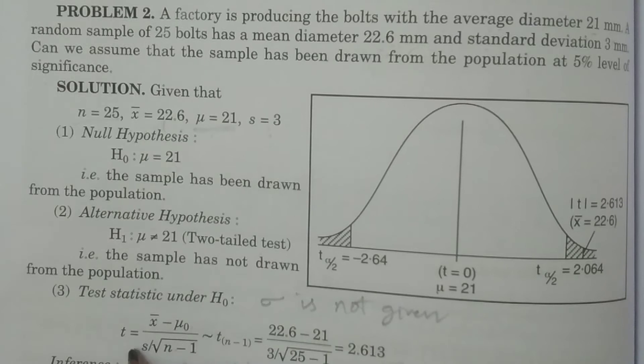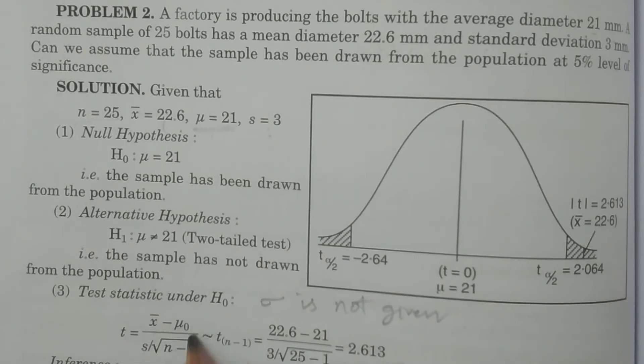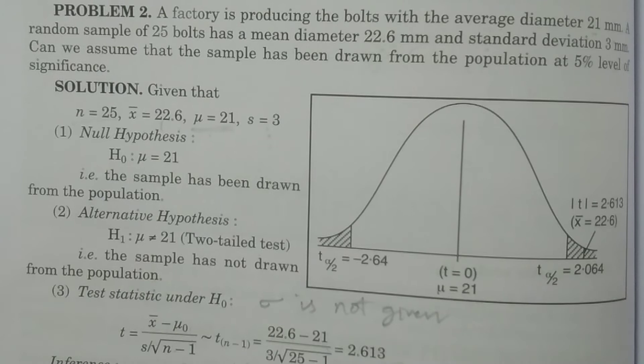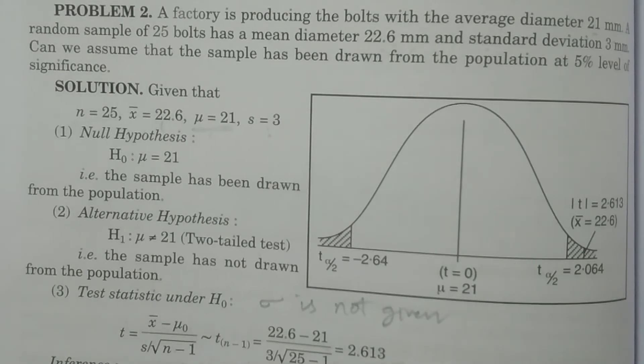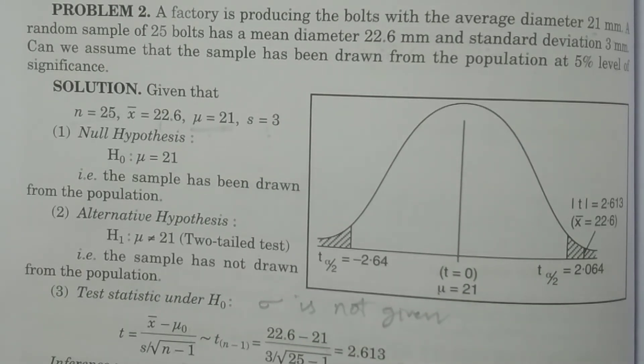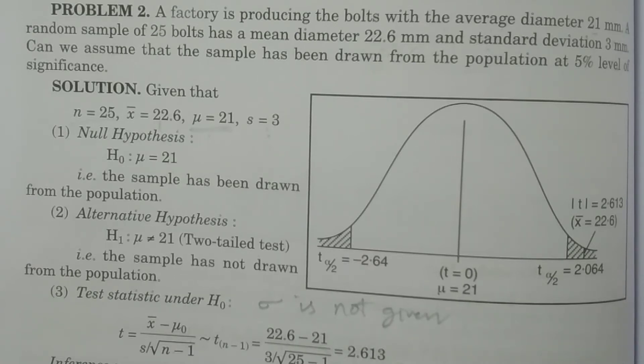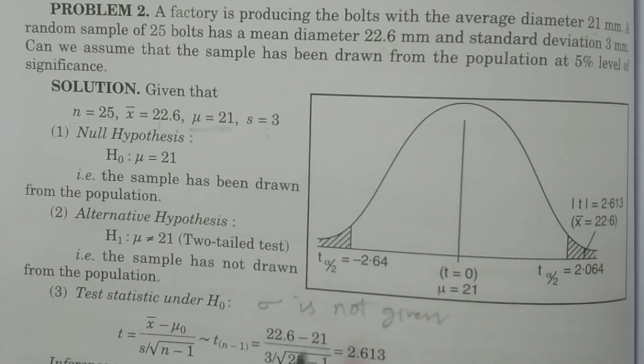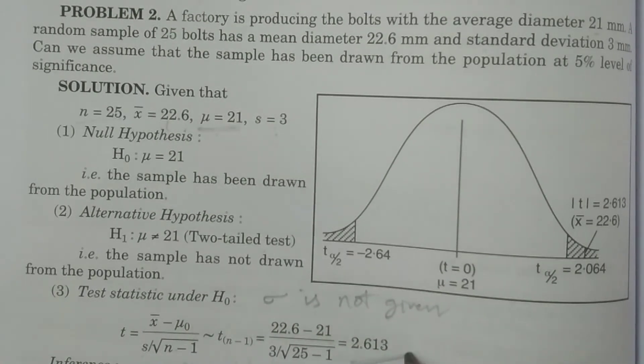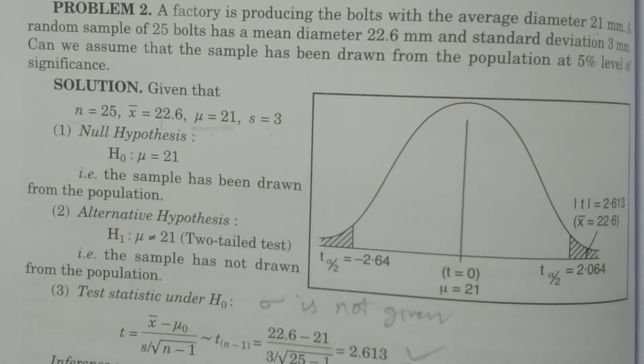That is, substitute values: x bar 22.6, mu naught 21, divided by s, 3 divided by square root of n minus 1, 25 minus 1. And if you calculate these values, 3 by the square root of 25 minus 1. If you calculate this value, we will get 2.613. You calculate it and you verify with your corrected value.